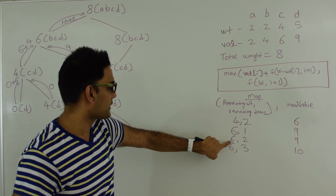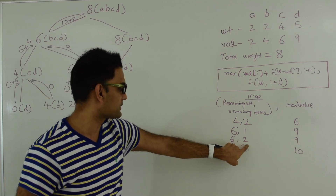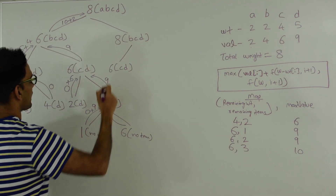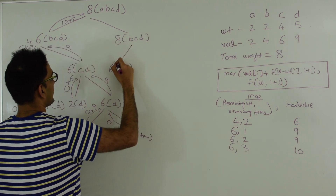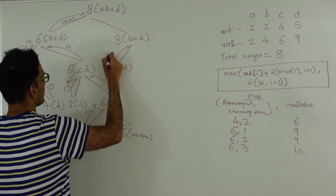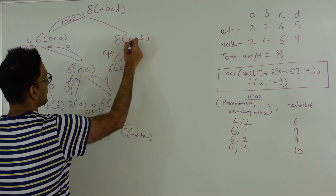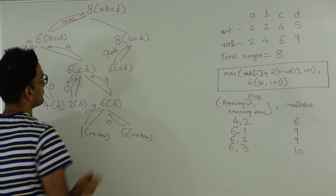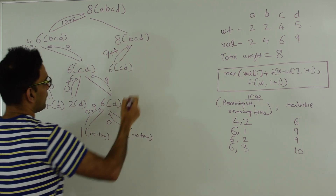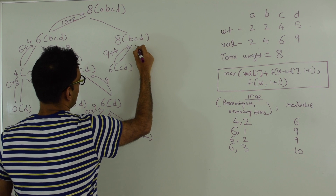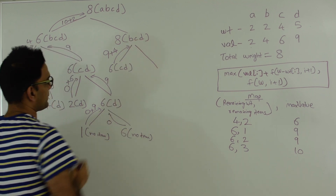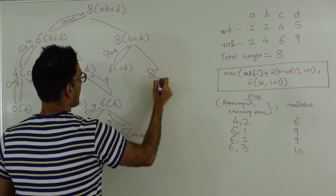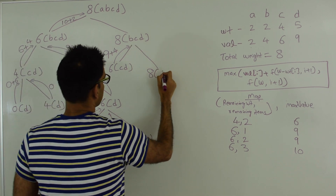This calculation we have already done: if remaining weight is 6 and we have the last 2 items, the best we can do is 9. So this returns 9, and by picking B we get a value of 4, giving us 13. On the right side if we don't pick B we're left with weight 8 and items C and D.